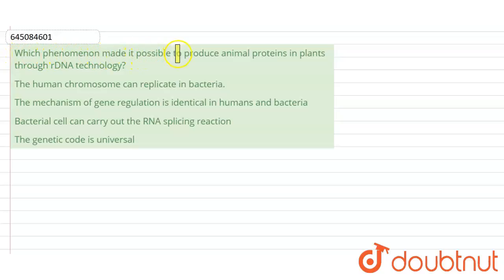The options are: first, the human chromosome can replicate in bacteria; second option, the mechanism of gene regulation is identical in human and bacteria; the third option, bacterial cells can carry out the RNA splicing reaction; and the fourth option, the genetic code is universal.